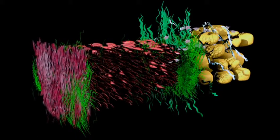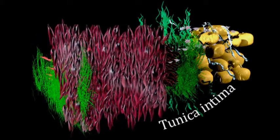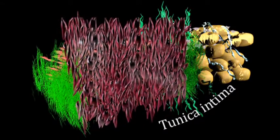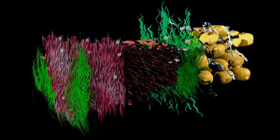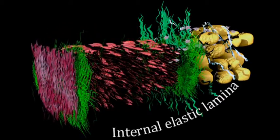The innermost layer of the vessel is called the tunica intima. It consists of endothelial cells which serve as a smooth barrier between the blood and cells of the vascular wall. The endothelium releases vasoactive factors whilst also controlling platelet adhesion, blood clotting, and inflammatory reactions.